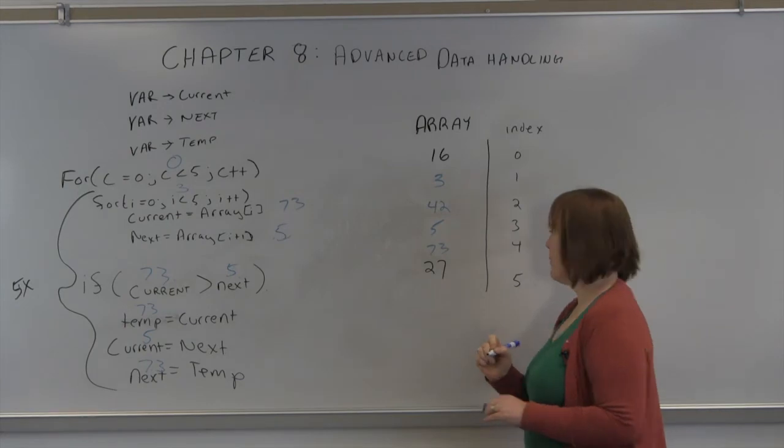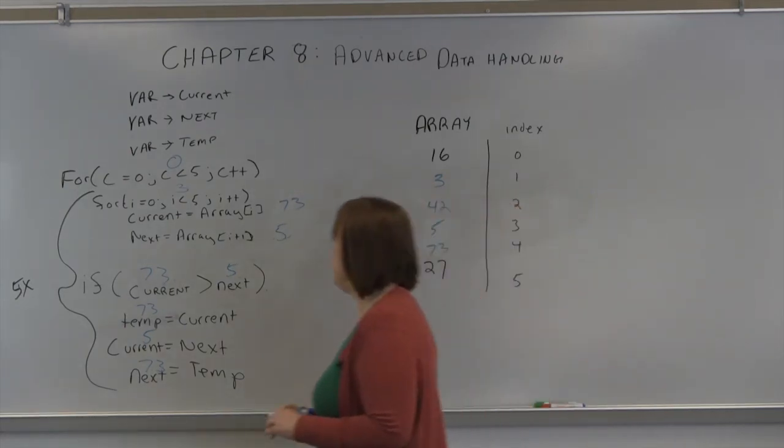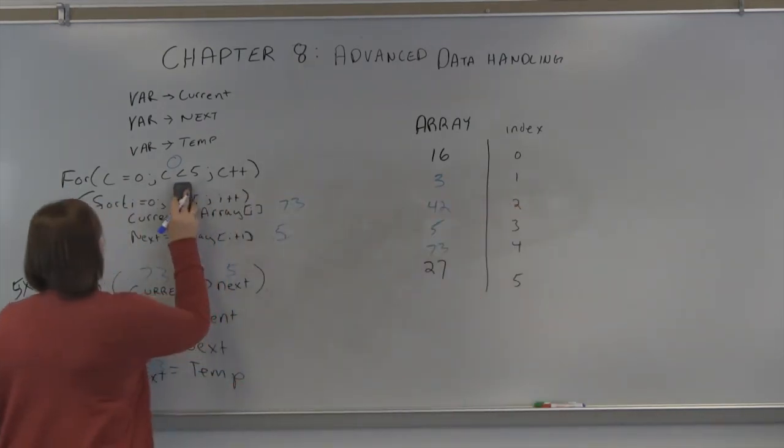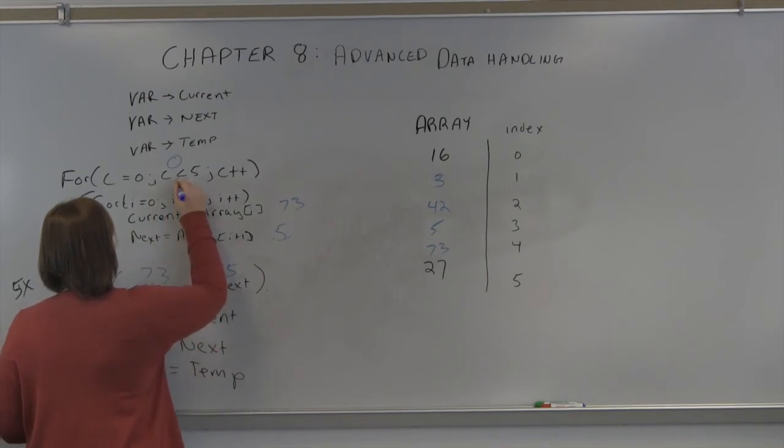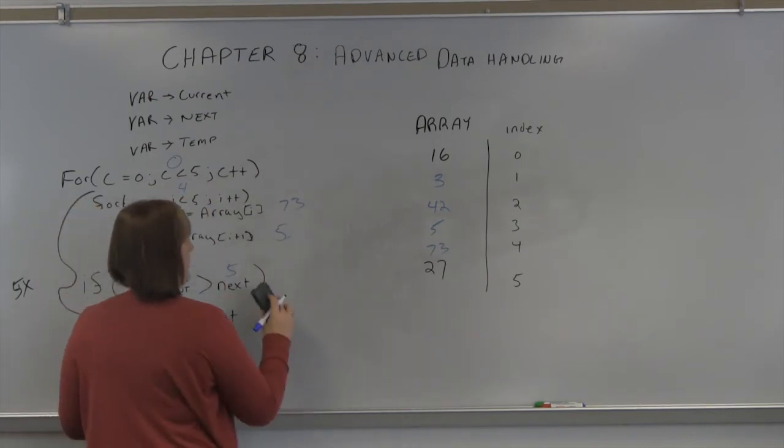It's getting better, we're still not in order. We're going to go through again. So we're now on 4. So 4 is now 73. 5 is 27.